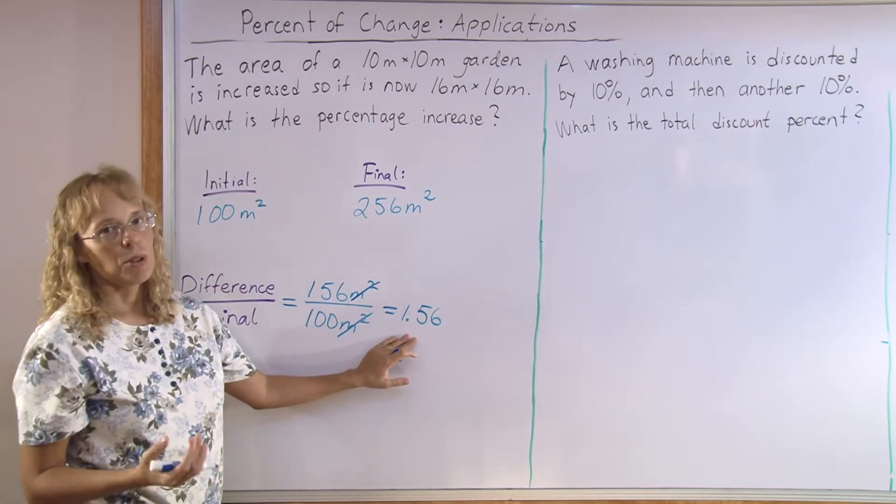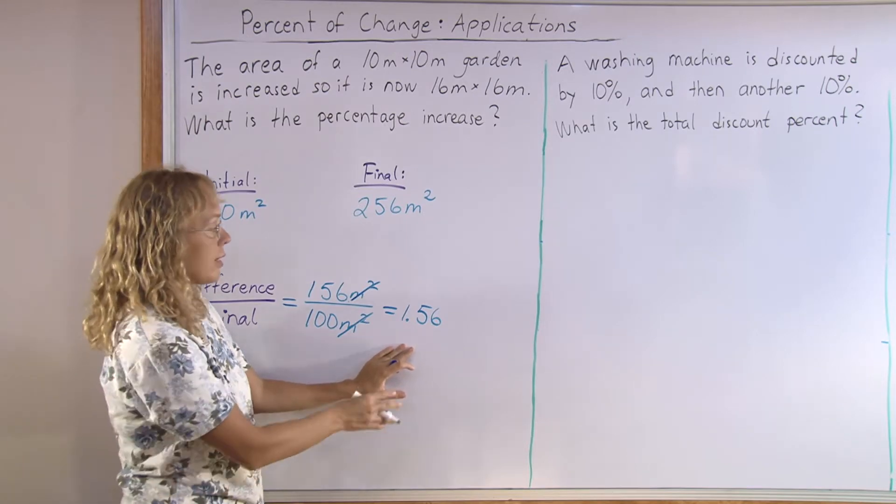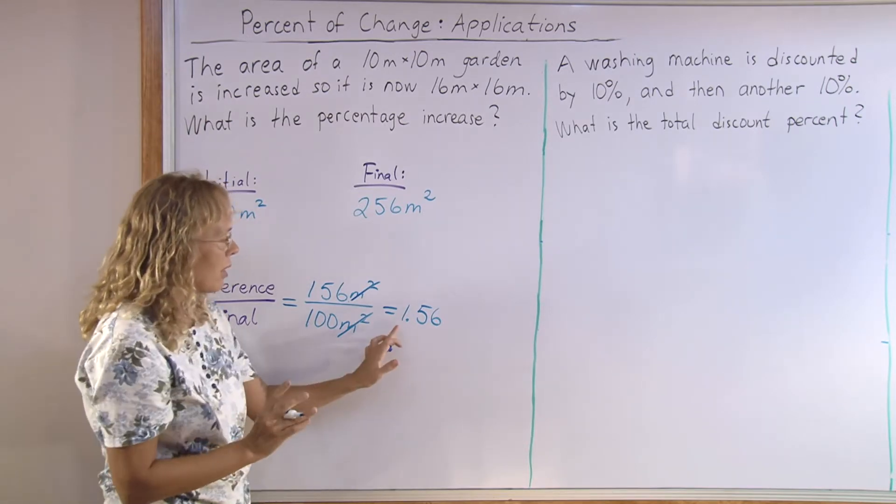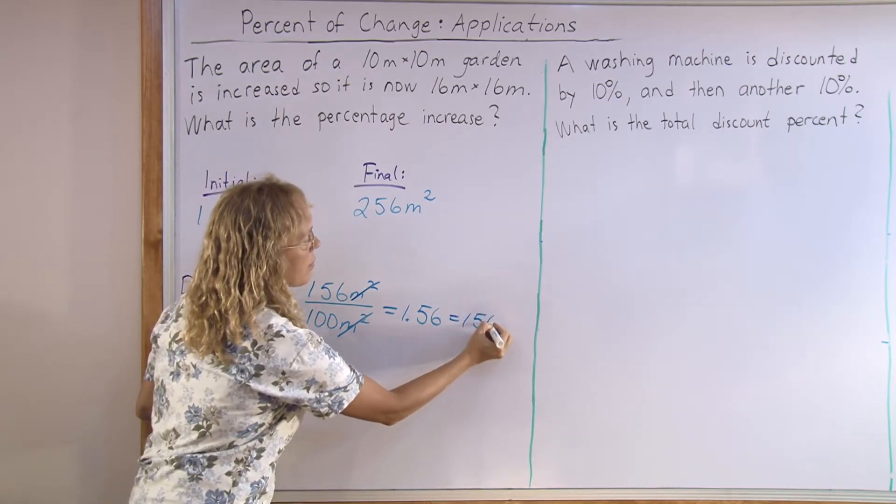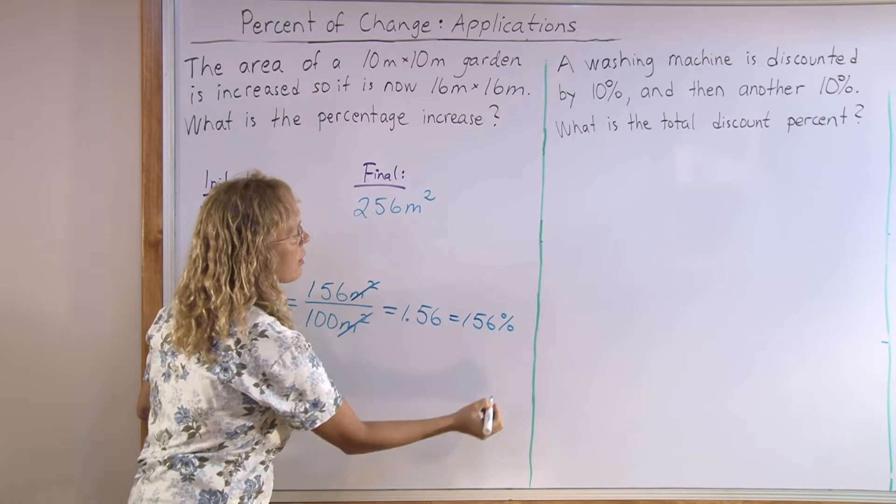Now, this is not yet the percentage. It is a decimal number. But remember, 1 would mean 100%. So, this is 156%. That's how much the area increased.